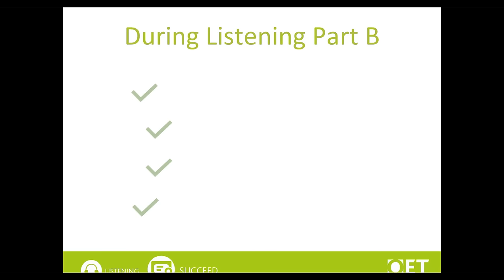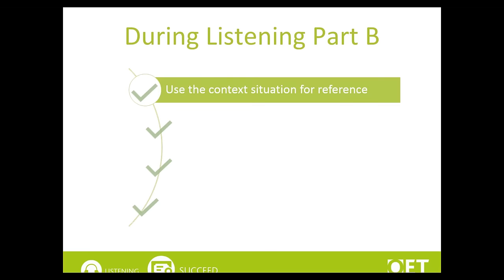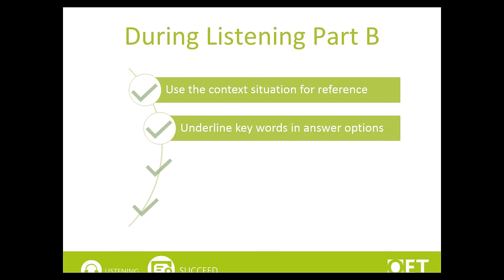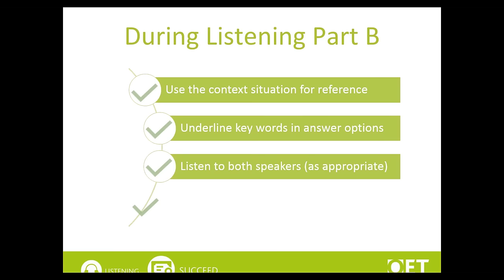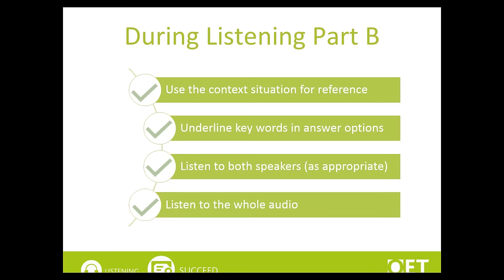In listening Part B, use the context situation to help you start imagining the communication you will hear and the vocabulary that will be included. Read the answer options carefully and underline key words which are going to help you identify the correct answer. If the extract includes two speakers, make sure you listen to what they both say, as you may need to understand a combination of their responses to choose the correct option. Listen to the whole audio and try to check all of the options by listening for information that proves each one is correct or incorrect.